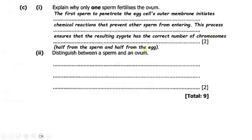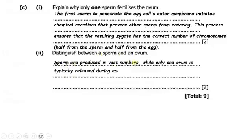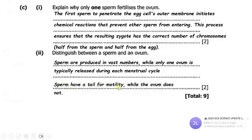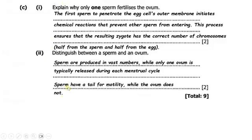Half the chromosomes come from the sperm and half from the egg. Part D: distinguish between a sperm and an ovum. Sperm are produced in vast numbers while only one ovum is typically released during a menstrual cycle. Sperm have a tail for motility while the ovum does not. A sperm cell is also smaller than an ovum. That brings us to the end of this quick revision — I hope you gained some insight, bye!